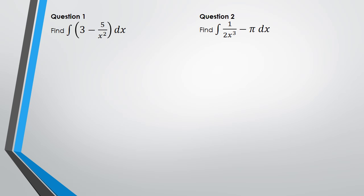Alright, so we've got the first question. Before I even start to integrate, I'm going to bring the x squared to the numerator, so I'm going to write this as the integration of 3 minus 5x to the power of negative 2, dx. When I integrate 3, I'm going to get 3x.